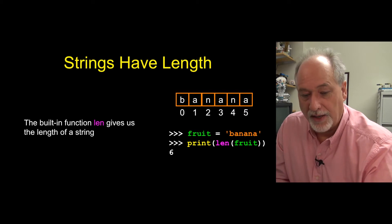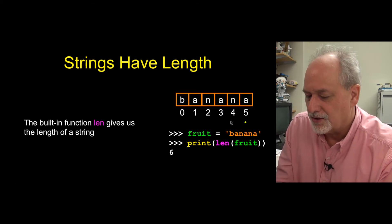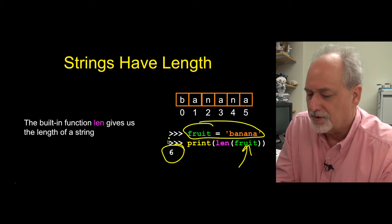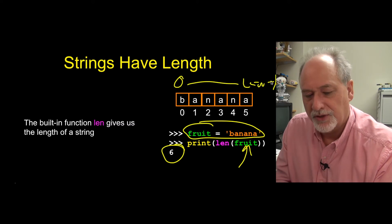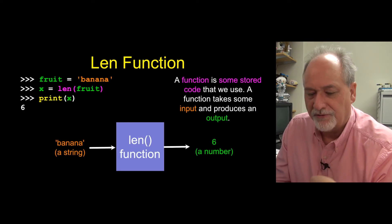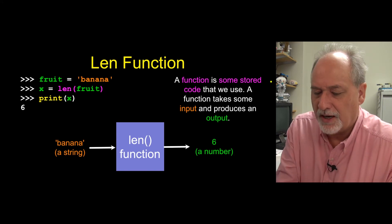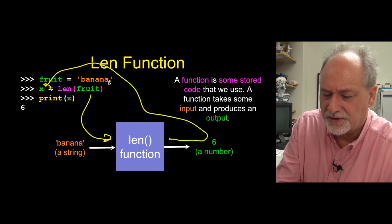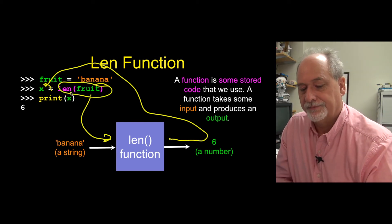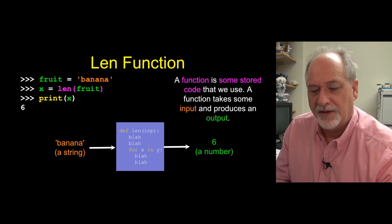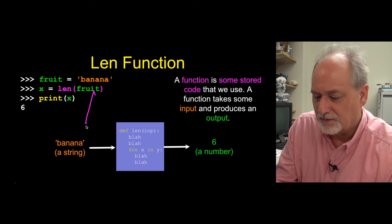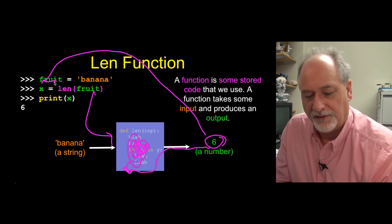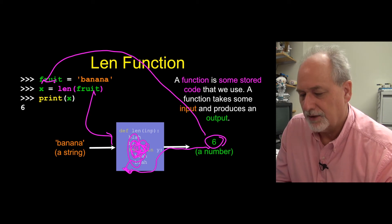We can ask how long a string is using the len function. We pass the string variable into len as a parameter, and len gives us back the length of the string, not the position — so it's zero through len minus one. Length is just another function; you pass in a parameter, len does some work, and out comes six, which goes back into x because the function has a return value. It just happens to be a built-in function.